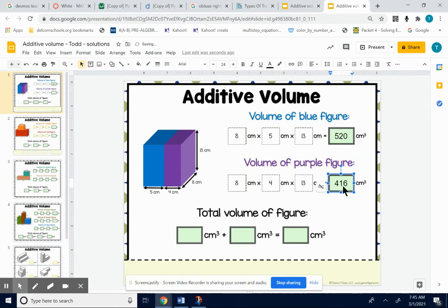So there's 520 cubes in the blue box, and there's 416 cubes in the purple box. We want to know the total number of cubes. Think of it that way. We're going to add those two answers up. 520 plus 416. When we add those up, we get 936 cubes. 936 cubic centimeters.